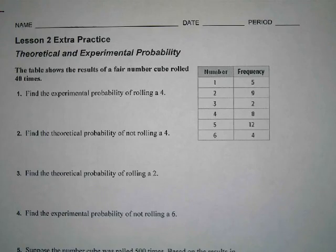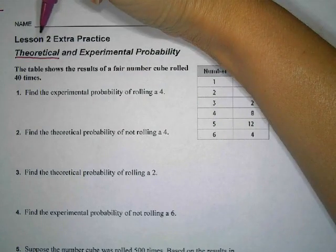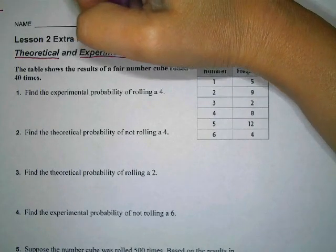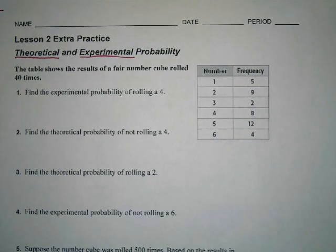Today's lesson is on theoretical and experimental probability. Theoretical is what the possibility is. Experimental is what it showed when we actually took the survey.